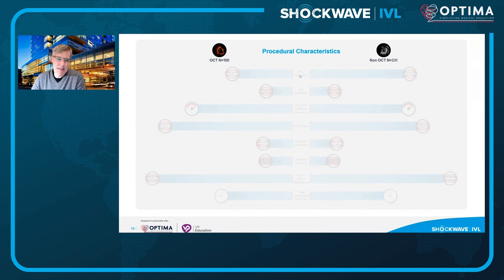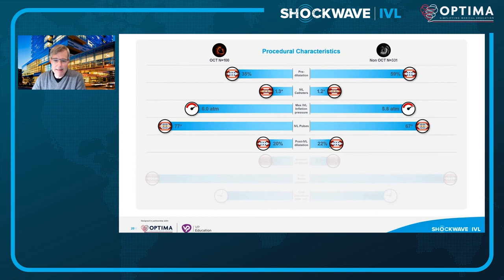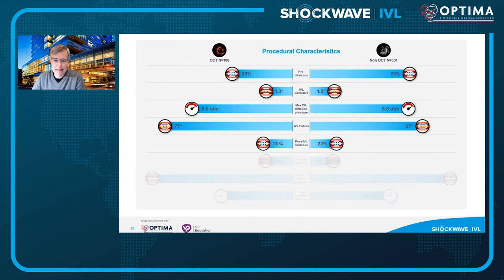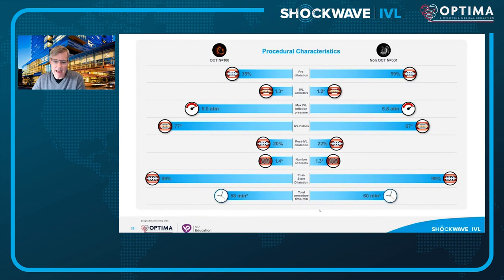Looking at the procedural characteristics of the OCT sub-study of DISRUPT CAD-3 — 100 patients in the OCT group versus 331 in the non-OCT group — demographics were relatively similar. Pre-dilation was slightly higher in the non-OCT group; number of IVL catheters used was 1.3 versus 1.2; inflation pressures, pulses, and post-IVL dilation were similar; and procedure time was also very similar. This is consistent with findings from the LIGHT Lab program: using a prescriptive OCT-based strategy does not add time to procedures, probably because you're working on a template of knowing exactly how the case should run.